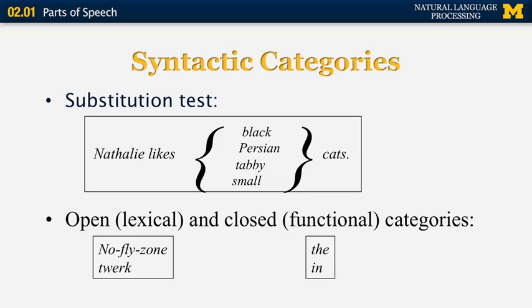There are many syntactic categories in English and other languages. These include open and closed categories. Open categories can have new words added to them over time — for example, 'no-fly zone' is a noun and 'twerk' is a verb, both added to English recently. Closed functional categories include words like 'the' and 'in,' which are respectively determiners and prepositions.